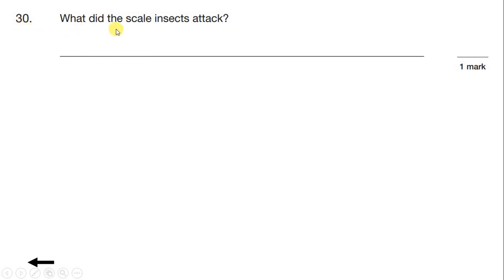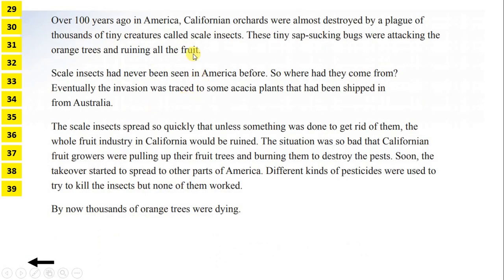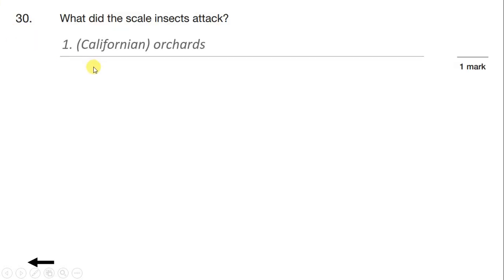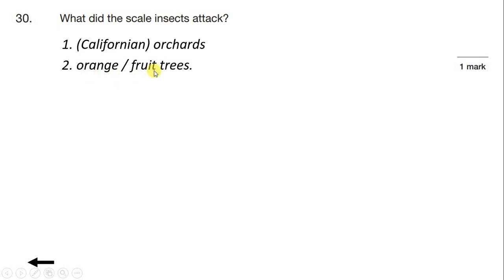Question 30: What did the scale insects attack? If we read the first paragraph again, we can see that it was Californian orchards that were almost destroyed, and these tiny sap-sucking bugs were attacking the orange trees and ruining all the fruit. So Californian orchards were being attacked, or we could write that they were attacking orange trees or fruit trees. Again, we need to be specific — we can't just write that they were attacking trees, because the text specifically says orange trees, and we can't just write fruit.